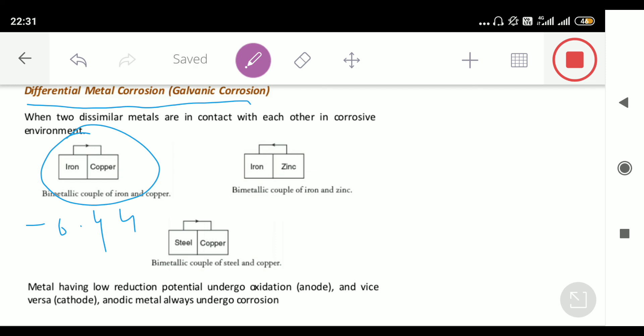Corrosion of zinc will take place and iron remains intact. This is the positive aspect of this corrosion—that iron can be prevented from corrosion by putting it in contact with zinc.